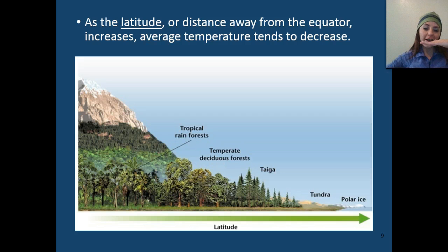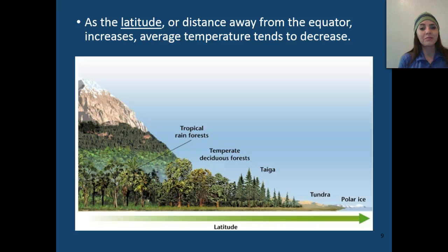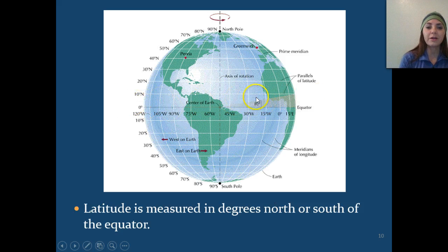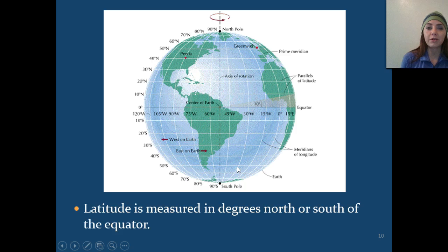Going way to the south, we drop into Antarctica where it's very, very cold. Latitude is measured in degrees north or south of the equator. As we go towards the North Pole it gets cooler, and as we go towards the South Pole it also gets cooler. The lines running from north to south pole are called our longitudinal lines.